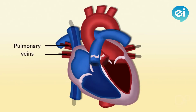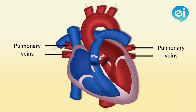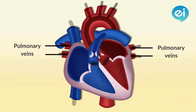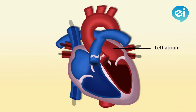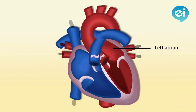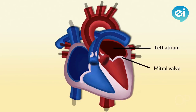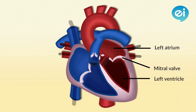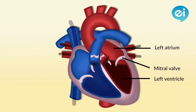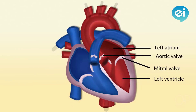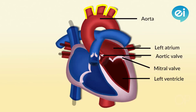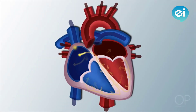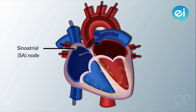The four pulmonary veins — two from the right lung and two from the left lung — carry oxygenated blood from the lungs to the left side of the heart. The oxygenated blood flows from the left atrium through the mitral valve and into the left ventricle, then out through the aortic valve and into the aorta and to the body.